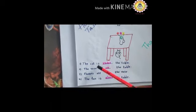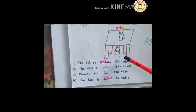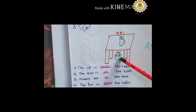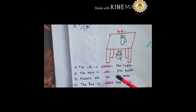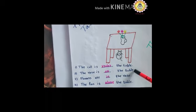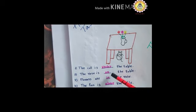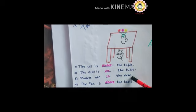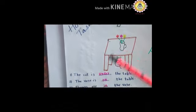Now, first one: the cat is dash the table. Where is the cat? It is under the table, so you have to write 'under.' The vase is dash the table. Where is the vase? It is on the table, so here you have to write 'on.' The flowers are in the vase.